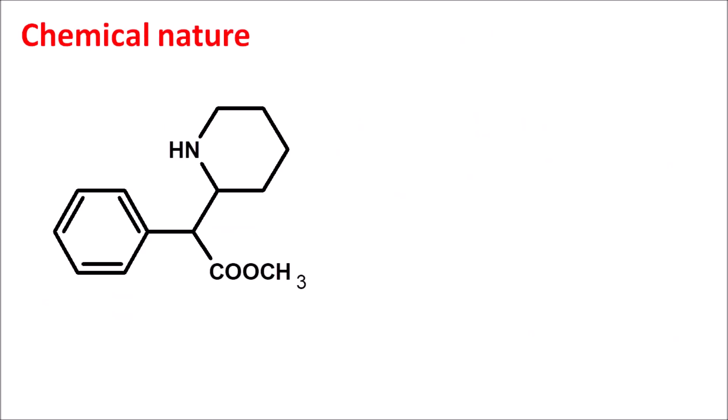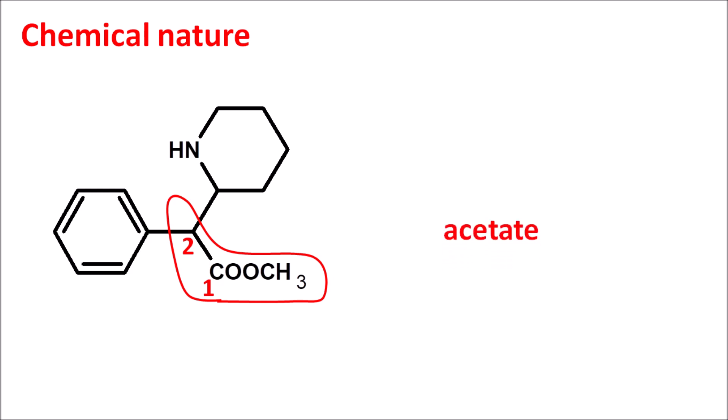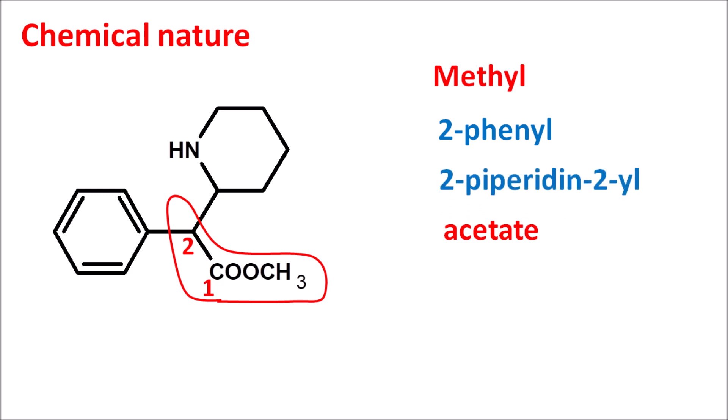This is the structure of methylphenidate, and here we can observe the ester functionality. Giving the numbering, position one and position two — it is an acetate derivative forming an ester with a methyl group, so it is a methyl acetate. At the second position, a phenyl ring is attached, and similarly a piperidine ring is also attached at the second position. Simply, methylphenidate is methyl phenyl acetate with a piperidine ring system at the second position.